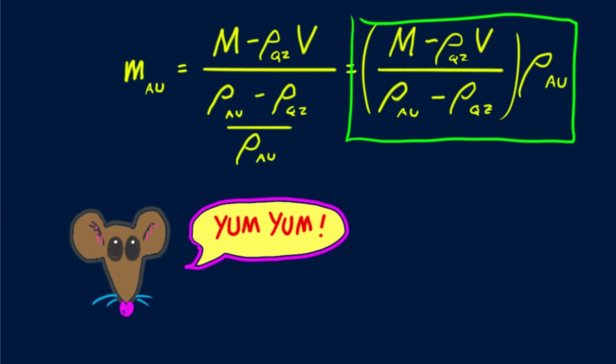I leave you with this question. Consider another chunk of quartz with the same mass, big M, but with a higher percentage of gold in it. Would its volume be slightly smaller, slightly larger, or be exactly the same? Think about that. Until next time, good energy!